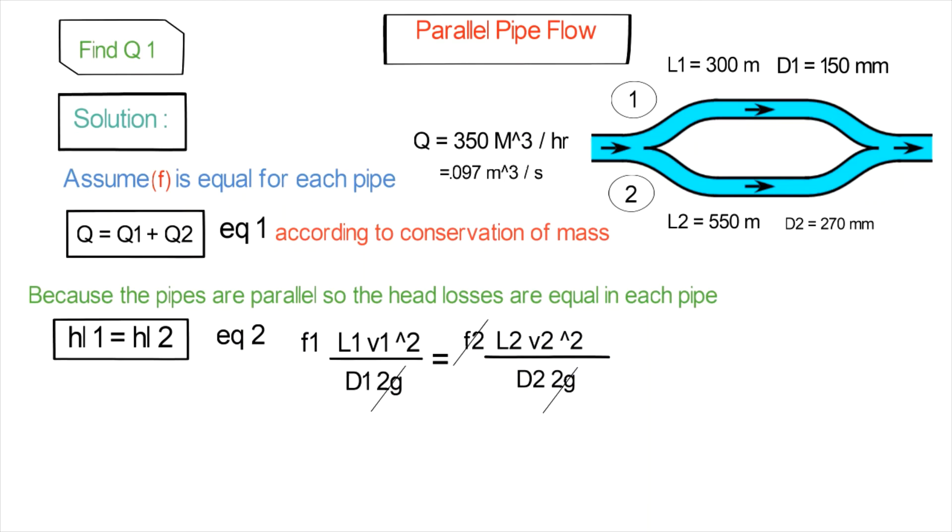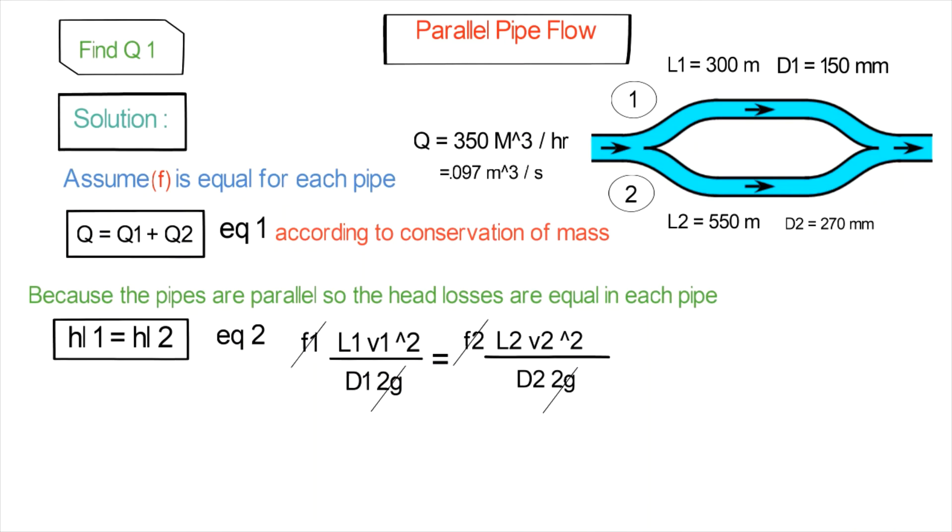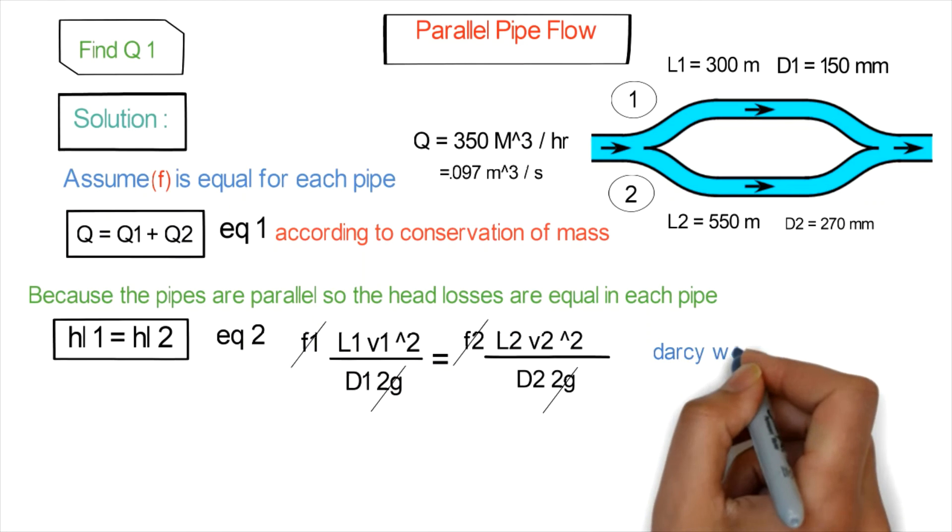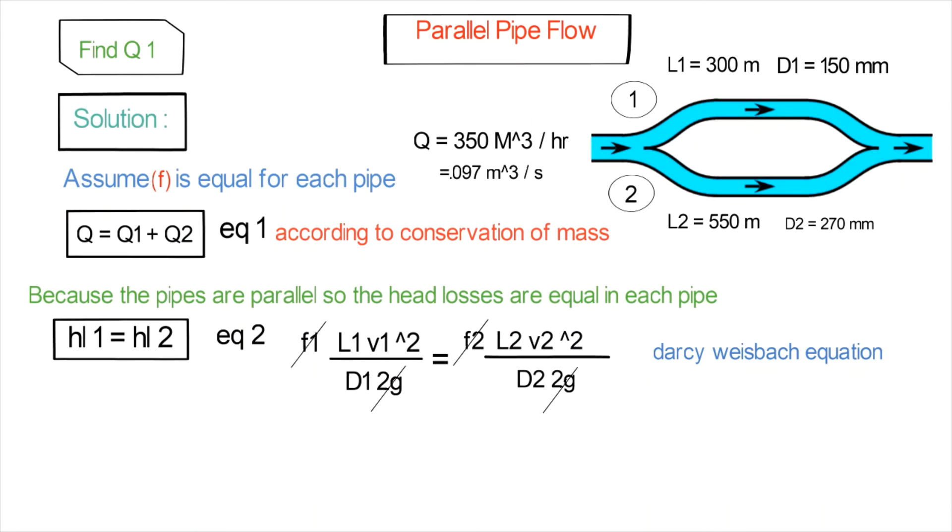As you know, Q or the flow rate equals V times A, which is the velocity times the cross-sectional area of the pipe.